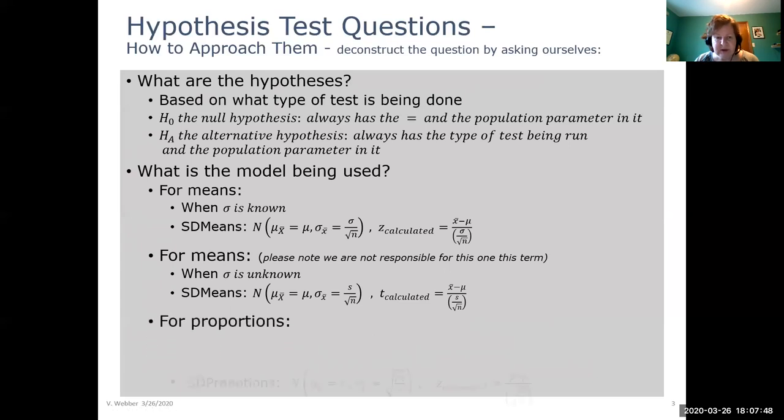And for proportions, we'd have sampling distribution of proportions with our shape, center, and spread as before. And our z calculated.